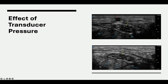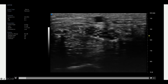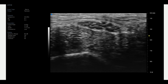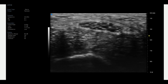Sometimes applying transducer pressure intentionally can provide better conspicuity by getting the nerve closer to the surface and helping distinguish some of the features. So as long as we're aware of the amount of transducer pressure we're using, we can use that as an effective tool. Here's an example of it moving — we can see the change from little pressure to more pressure, and that changes the effect of our image.